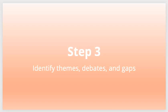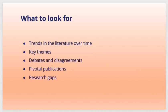Step three is identifying themes, debates, and gaps. Now you want to start thinking about what your evaluation of relevant sources reveals. Look for identifiable trends in the literature, themes that come up often, ongoing debates, and gaps in the research. When you encounter disagreement between scholars, consider whether the issues they disagree on are relevant or warrant further investigation. Identifying a good research gap is very important because only then can you do better research to fill that gap.